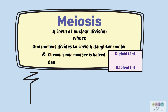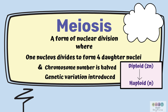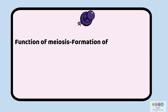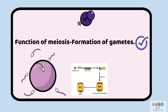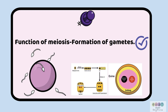With meiosis, genetic variation is introduced — this is really significant. Meiosis varies the genetic code and then transmits this new code in gametes. The function of meiosis is the formation of gametes. We encountered this in human reproduction with the production of sperm and egg, and also in sexual reproduction in plants with the formation of the female egg cell and the pollen grain with its two nuclei.